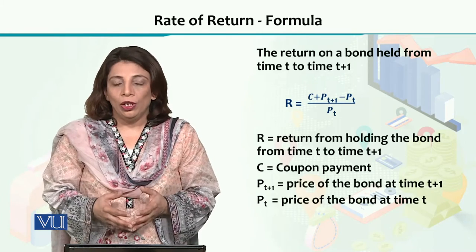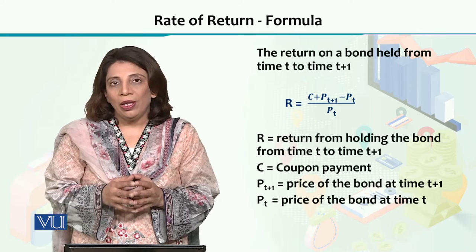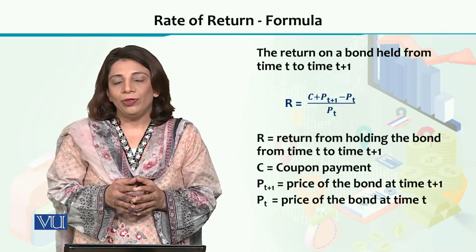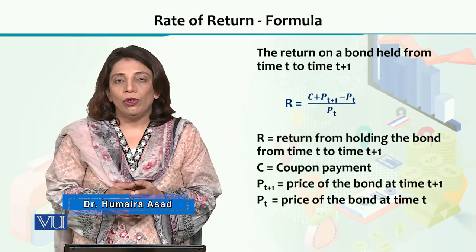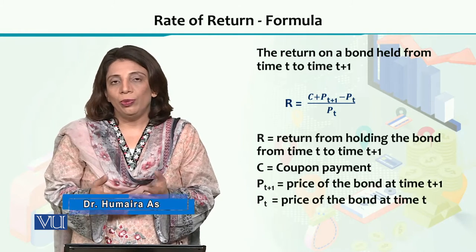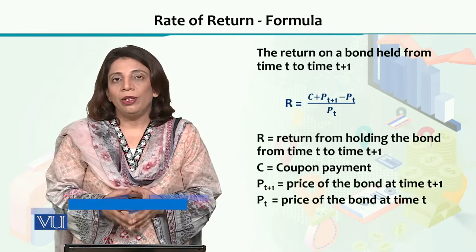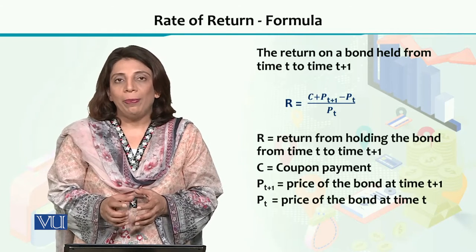If we look at the formula, it will be given as a capital R, where capital R stands for the return or the rate of return. And for the coupon rate or the interest rate which is going to be earned on that particular financial instrument, I have used capital C.